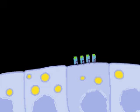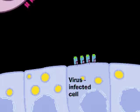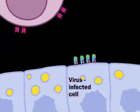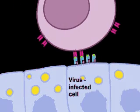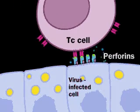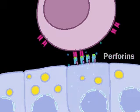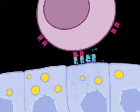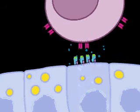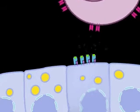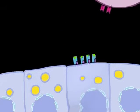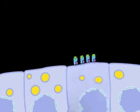The infected cells display viral antigen on their surfaces. When an activated cytotoxic T cell binds specifically to the displayed antigen, the T cell releases a protein called perforin, which perforates the plasma membrane of the infected cell, allowing water to enter and causing it to lyse.